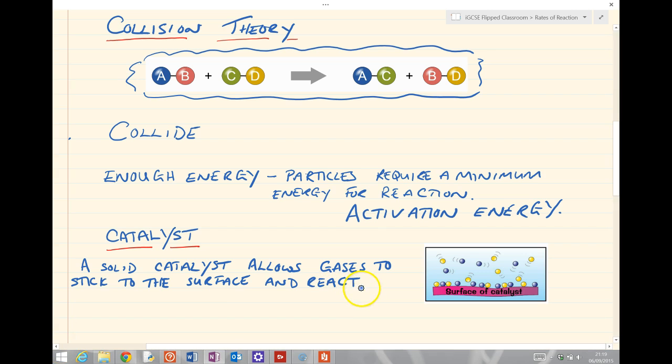So a solid catalyst allows for gases to stick to the surface and react. They then increase the rate of reaction by sort of increasing the collision, but they also do something else which is a little bit clever. They lower the activation energy. So they increase the rate of reaction by lowering the activation energy.